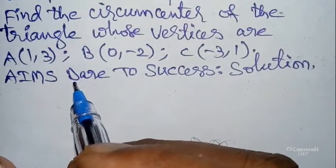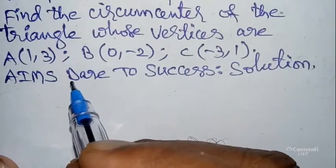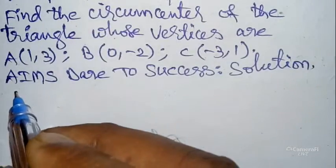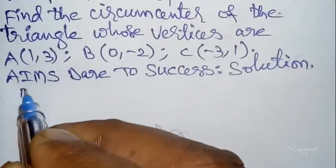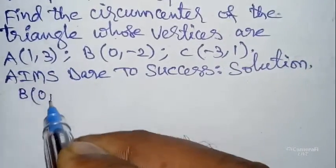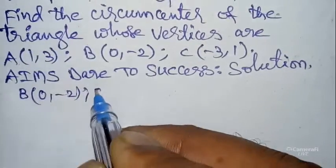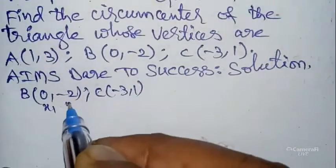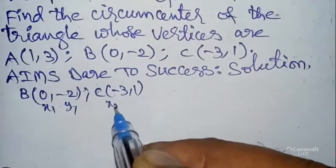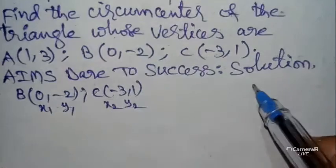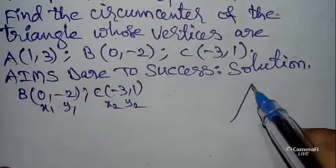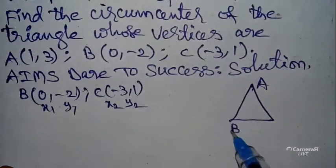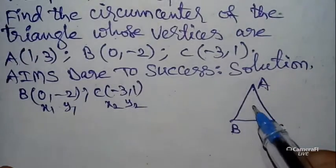First of all, I will write B value as (0, -2) and C value as (-3, 1). Let these be (x1, y1) and (x2, y2). Take a triangle ABC. The circumcenter S is connected perpendicularly to side BC, with intersecting point D, and to side AC with intersecting point E.